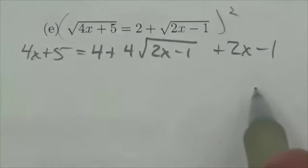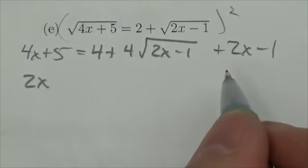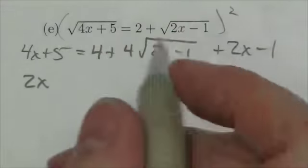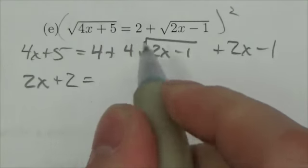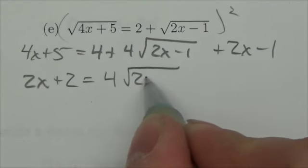Now, I'm gonna bring over the terms here, so I'm gonna bring over the 2x, so on the left hand side I'll have 2x. 4 minus 1 is 3 on the right hand side, so subtract it, this will be plus 2. Well I kind of like that, the 2x plus the 2, is equal to 4 root 2x minus 1.